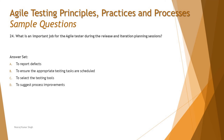Moving to Question 24, which asks: what is an important job for an agile tester during the release and iteration planning session? We discussed a specific topic about the responsibility and contribution of a test engineer during release and iteration planning. Option A says 'to report defects' — it's a planning session, so there's no scope for reporting defects at this point. Option B says 'to ensure the appropriate testing tasks are scheduled' — yes, scheduling is a part of planning.